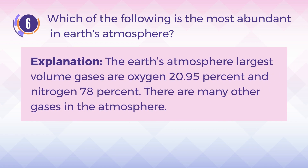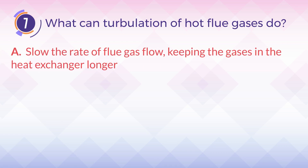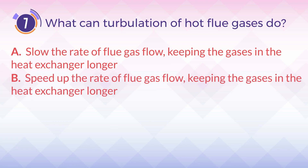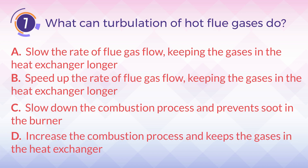The Earth's atmosphere's largest volume gases are oxygen at 20.95% and nitrogen at 78%. There are many other gases in the atmosphere. Number 7. What can turbulation of hot flue gases do? A. Slow the rate of flue gas flow, keeping the gases in the heat exchanger longer. B. Speed up the rate of flue gas flow, keeping the gases in the heat exchanger longer. C. Slow down the combustion process and prevent soot in the burner. D. Increase the combustion process and keep the gases in the heat exchanger.